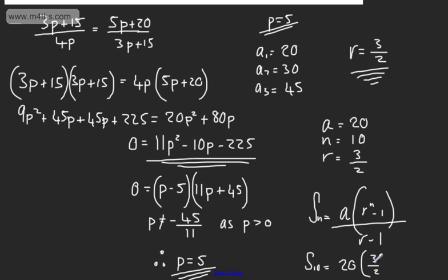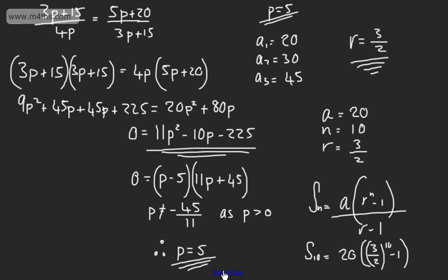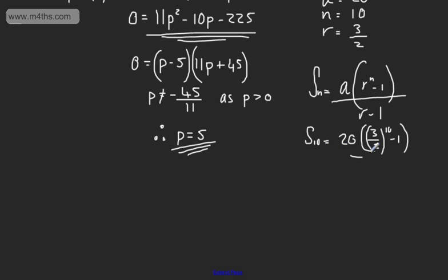So we can say the sum of the first 10 terms is 20 times 3 over 2 raised to the power of 10, subtract 1, and then divide by the ratio minus 1. Now the ratio minus 1 is going to give us 1 half.